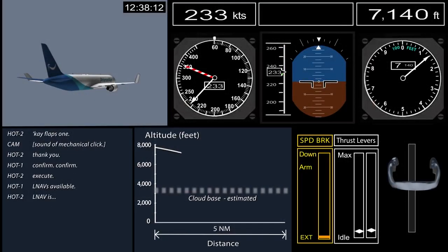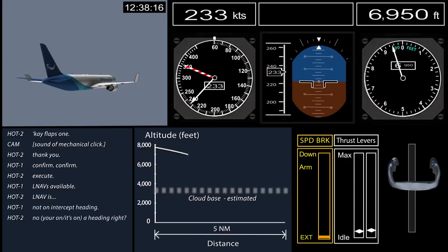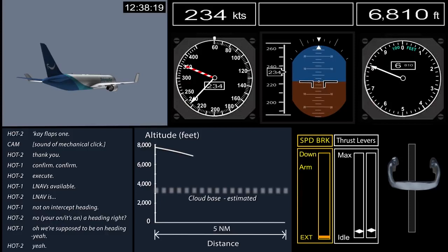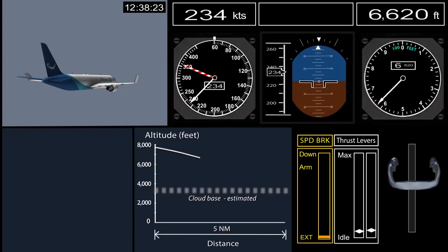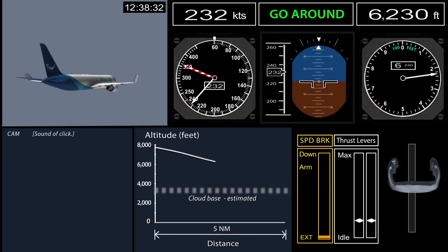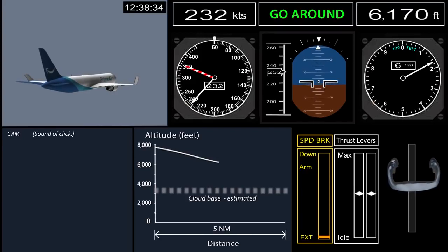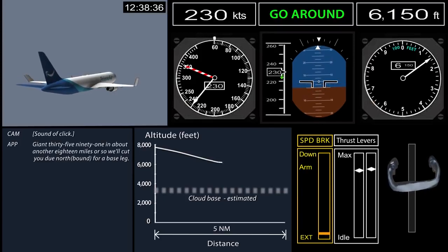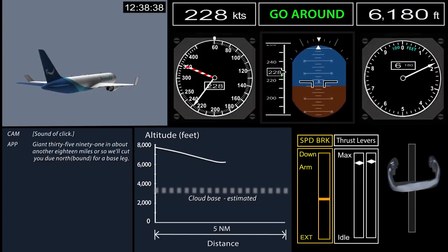The crew was setting up the approach procedure when the airplane encountered light turbulence. Shortly afterward, the autopilot and auto throttles entered go-around mode as the airplane was passing about 6,300 feet. There were no flight crew call outs. Consistent with the activation of the go-around mode, the airplane arrested the descent and began a slight pitch up, the thrust levers advanced, and the speed brakes were retracted, which could only be done manually.